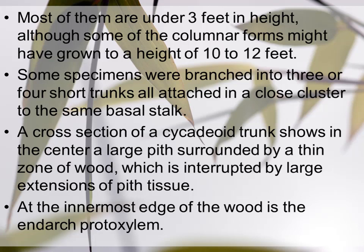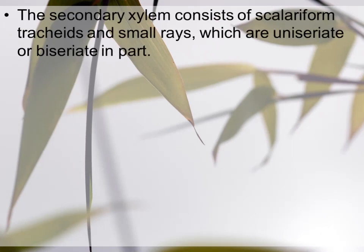At the innermost edge of the wood is endarch protoxylem. Wood کا جو innermost part ہوتا ہے وہاں پر endarch protoxylem present ہوتا ہے۔ The secondary xylem consists of scalariform tracheids and small rays which are uniseriate or biseriate in part. جو secondary xylem ہے اس کی tracheids کی thickening scalariform ہے — ladder-like thickening of tracheids is called scalariform — اور uniseriate یا biseriate rays ہوتے ہیں۔